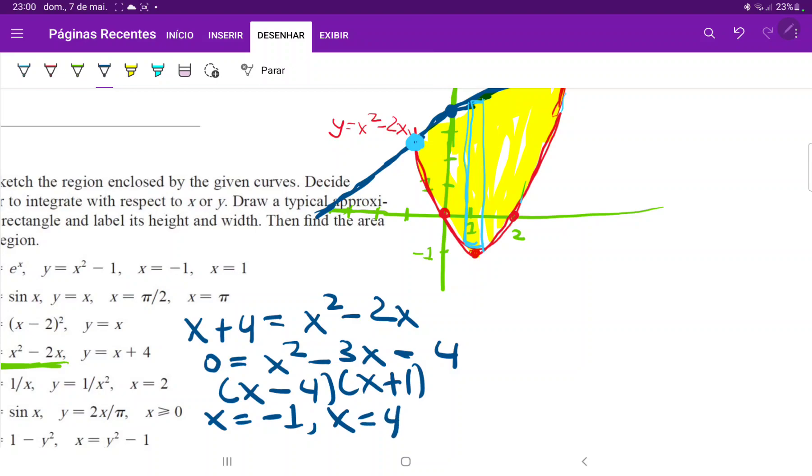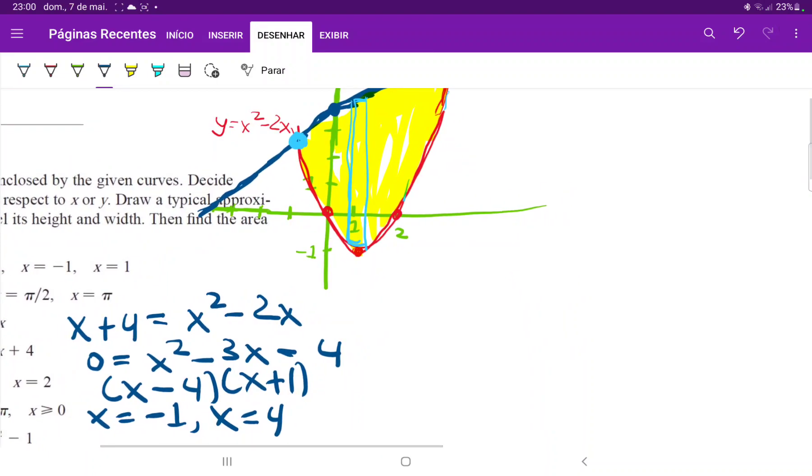So, with this in mind, we are ready to build our integral. It is the integral from minus 1 to 4. And remember that when we're summing up, we're just summing up these rectangles. So, we do the higher function minus the lower function. The higher function is x plus 4 and then minus x squared minus 2x, which is the lower function. And all of this times dx because we can't forget that our rectangle does have a width dx.